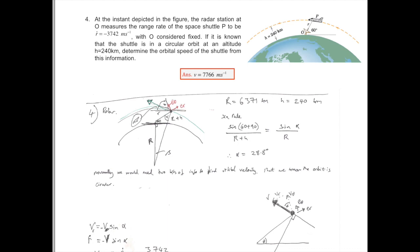Question 4. At the incident depicted in the figure, the radar station at O measures the range rate to the space shuttle P.